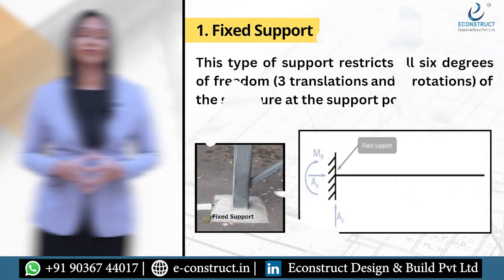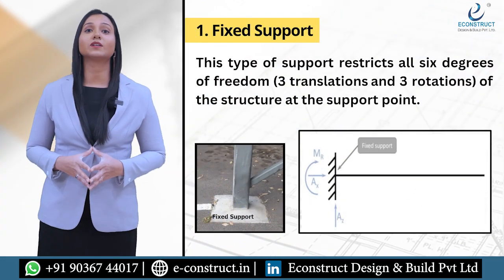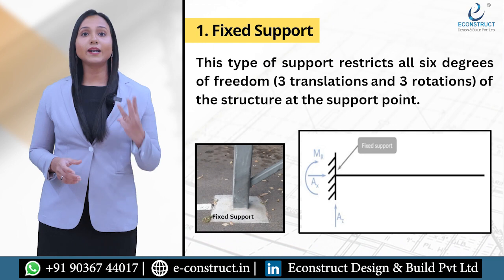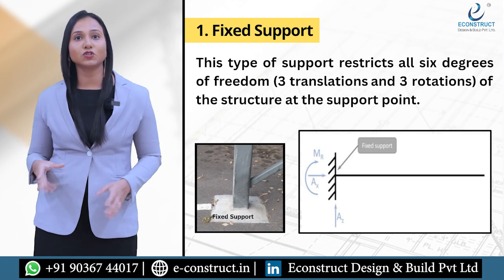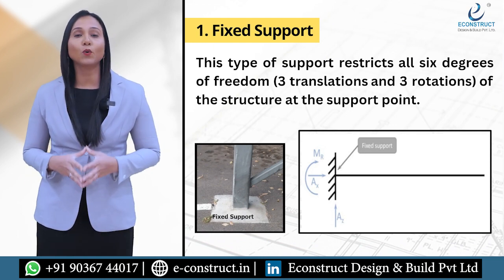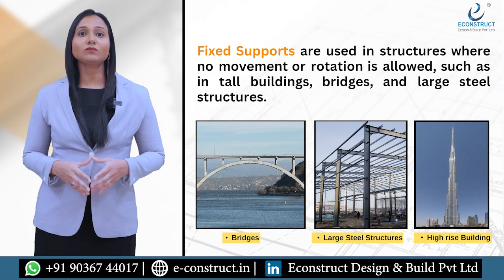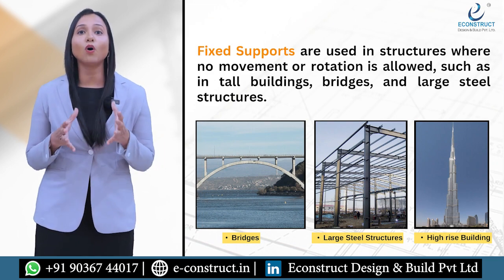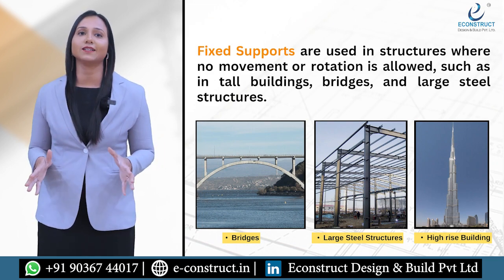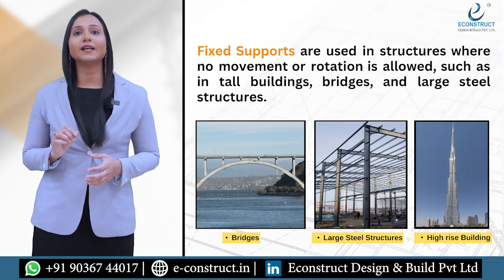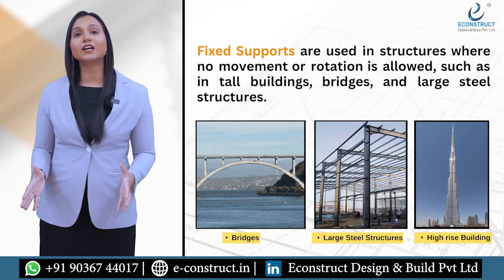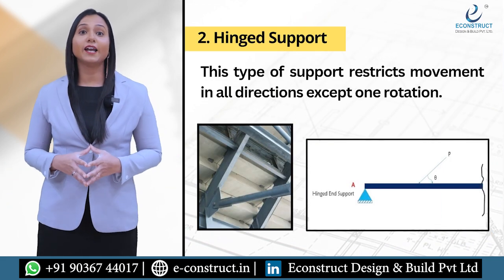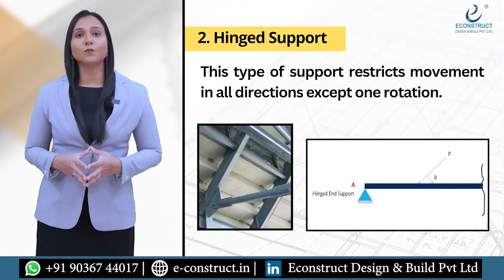The first one is fixed support. This type of support restricts all six degrees of freedom — three translations and three rotations — of the structure at the support point. Fixed supports are used in structures where no movement or rotation is allowed, such as tall buildings, bridges, and large steel structures.